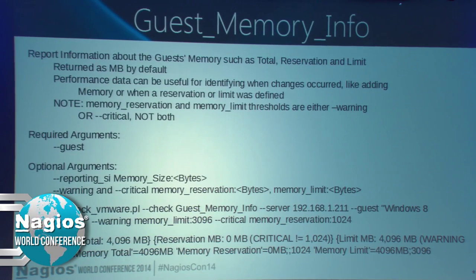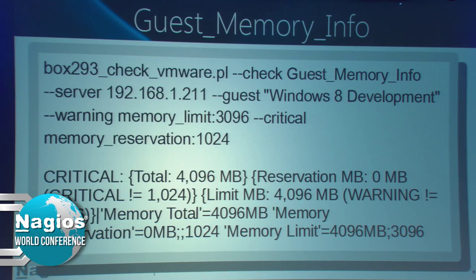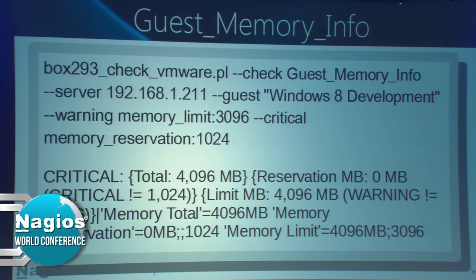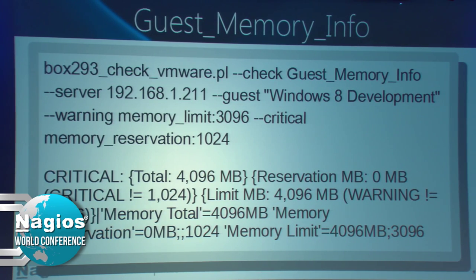Guest memory info - very similar to the CPU info check. You can once again check on limits and reservations. With memory, these are some very important things you do or do not want to happen. In this example there's a critical where the reservation is not equal to 1,024, but there's also a warning because the limit is not equal to 3,096. Critical is the higher of the two, so the overall state is critical, but there are also other things going on that are highlighted so you know exactly what they are.